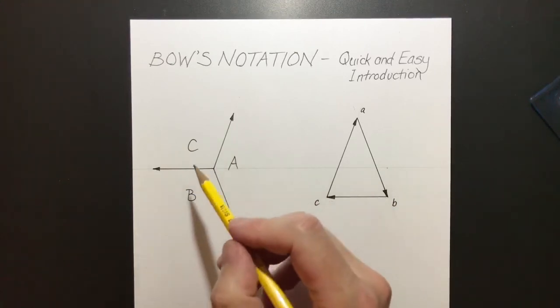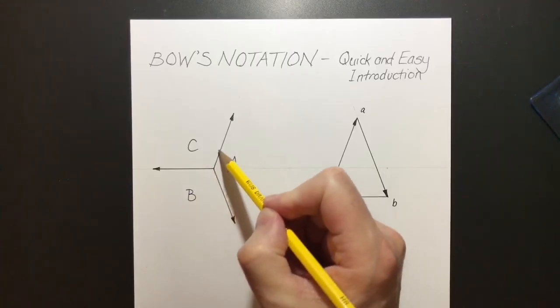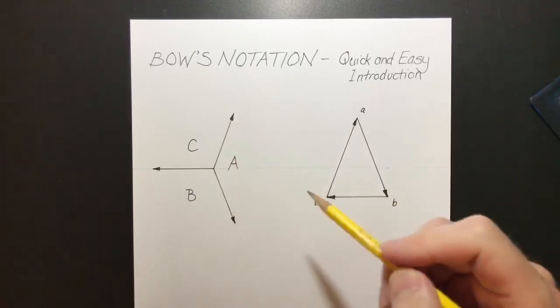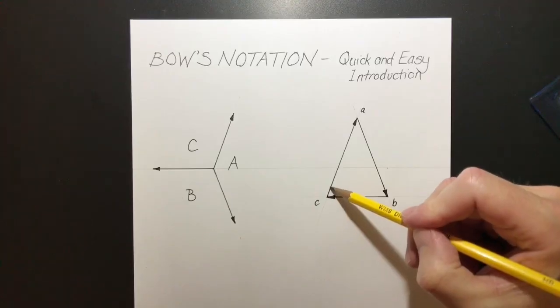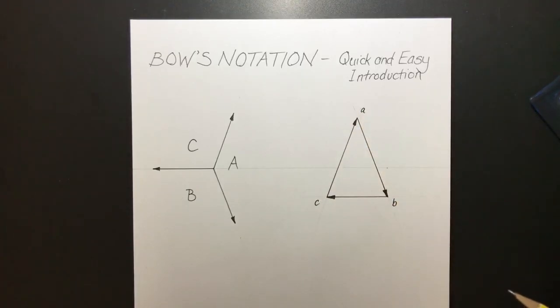The last force on the diagram is between C and A. It's this force, and it's represented on the force diagram here between the lowercase letters C and A. And that's it.